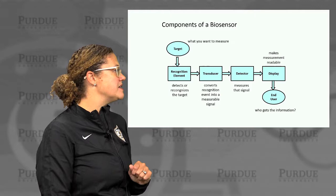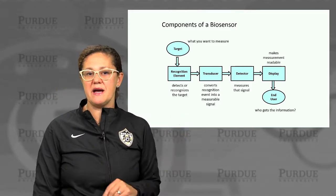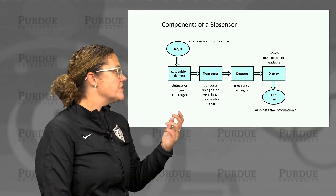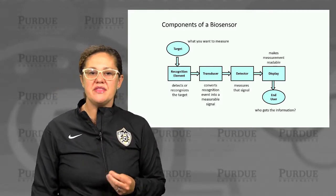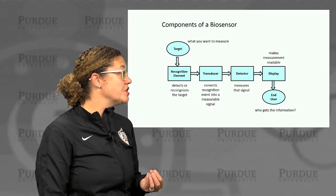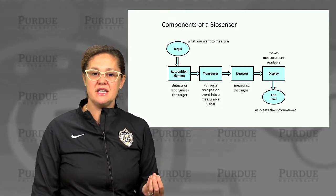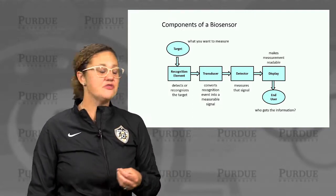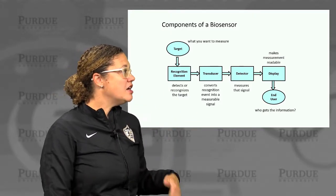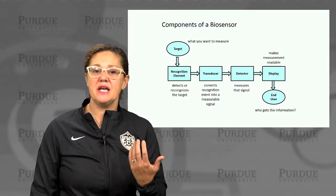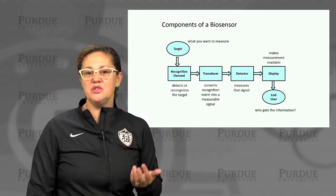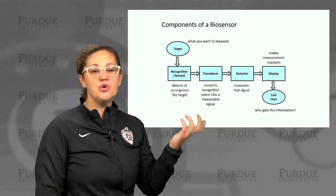The components of a biosensor: we have some target, this biological entity — this is the thing you want to measure. There's a recognition element, which is the component that detects or recognizes this target. There's a transducer that converts this recognition event into some measurable signal. We have to measure that signal with a detector. And often there's some sort of display or conversion that makes the measurement readable to our end user — usually us. Who gets the information?